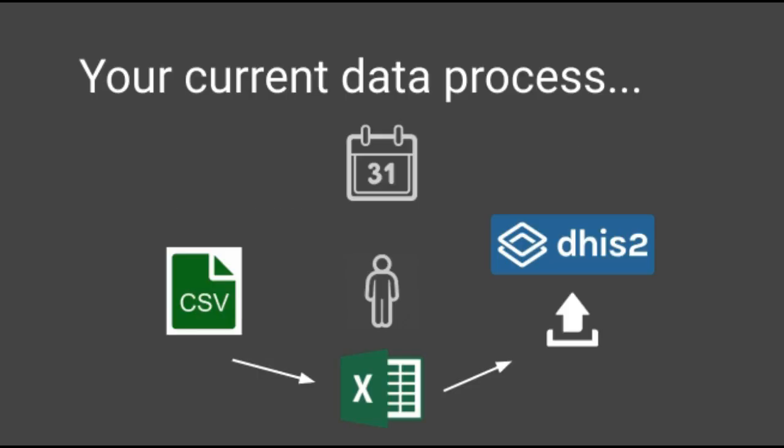If connecting with DHIS2, your current data process might look something like this. Perhaps you have a set of CSV files saved on your computer where, on a monthly basis, a data entry staff member is in charge of transforming that data — maybe reformatting the CSV file to make sure the date is in the right order, that yes-and-no questions are converted into Boolean true-false values, reformatting and validation to ensure that when you upload that file to DHIS2, there will be no errors in that data import process.